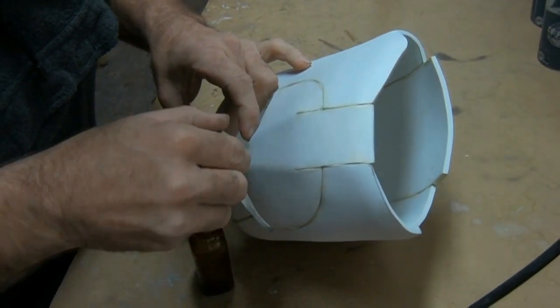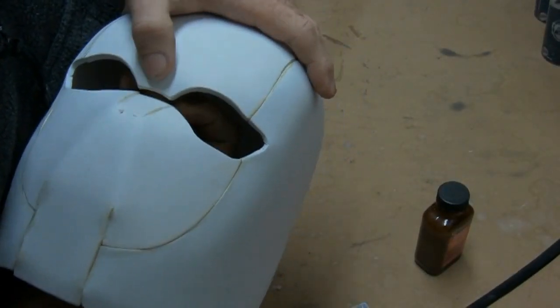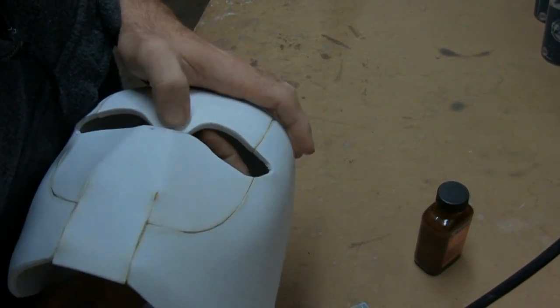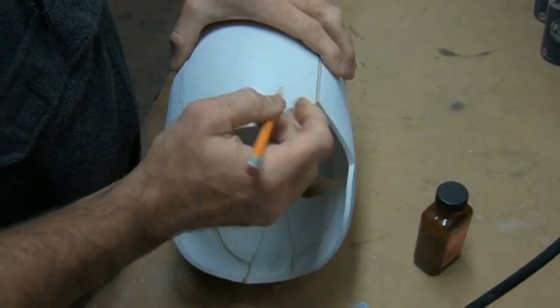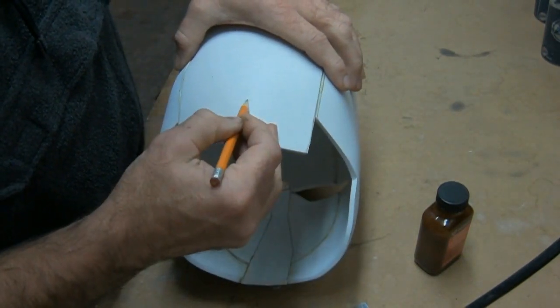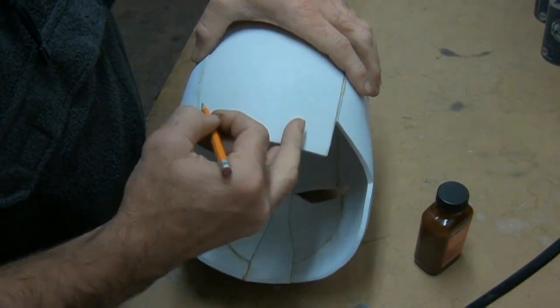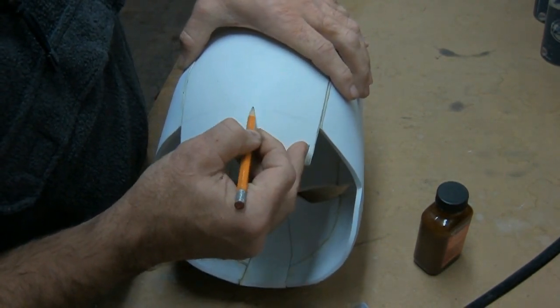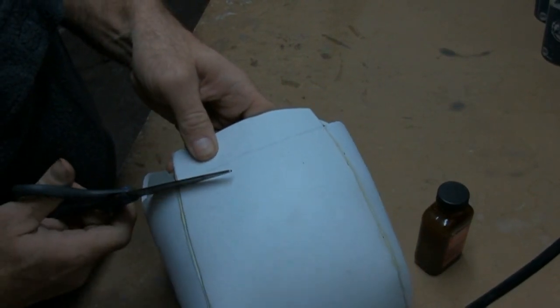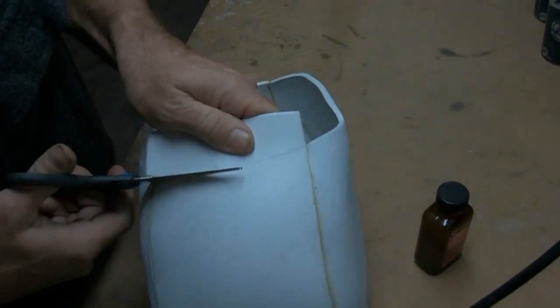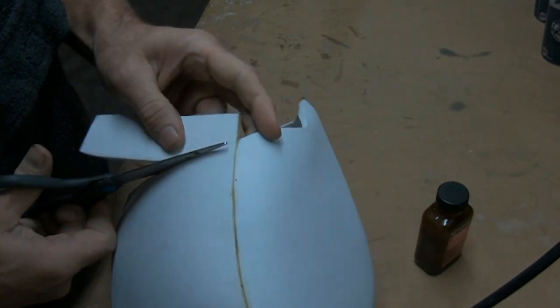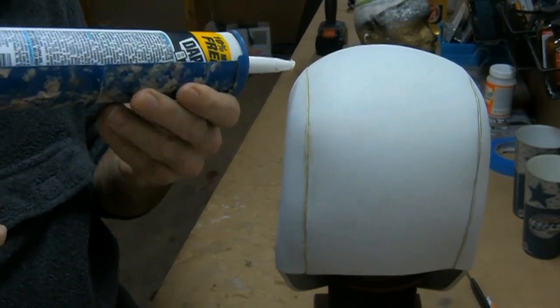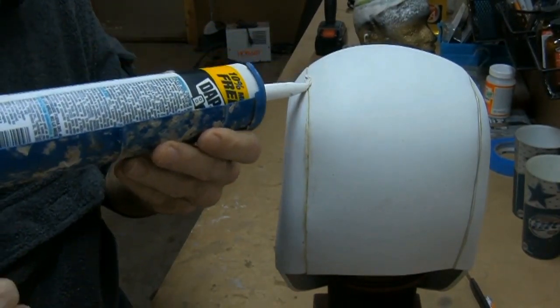Glue the top of the helmet and the nose guard together. On the back of the helmet draw a curved line to mark the area that needs to be removed. Once your line is marked you can cut off the excess. Then you can use painters caulk to fill any gaps.